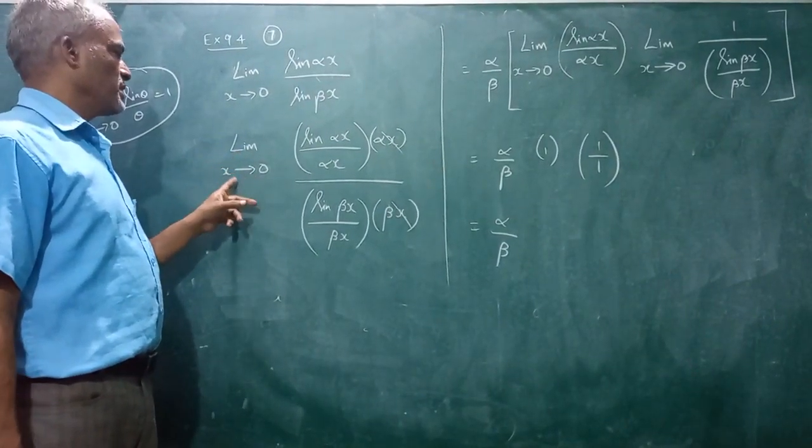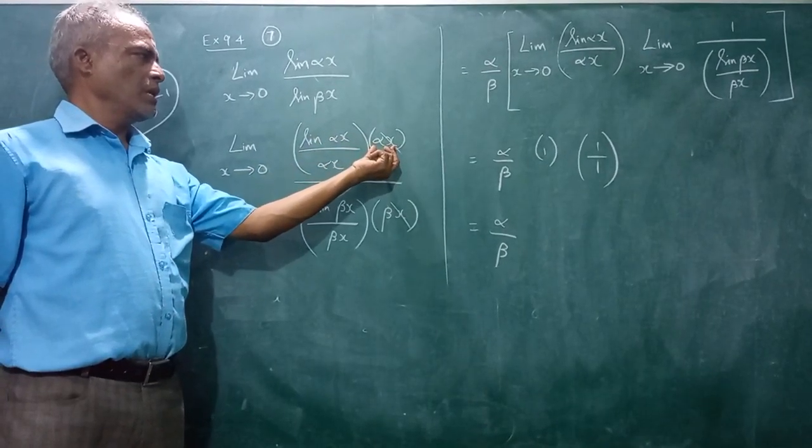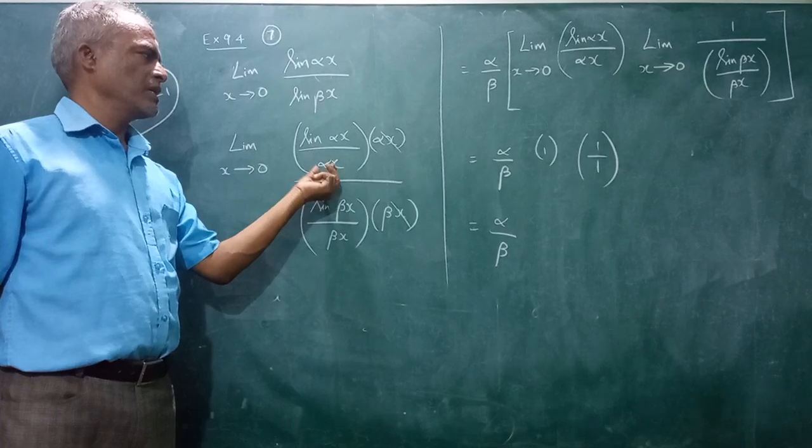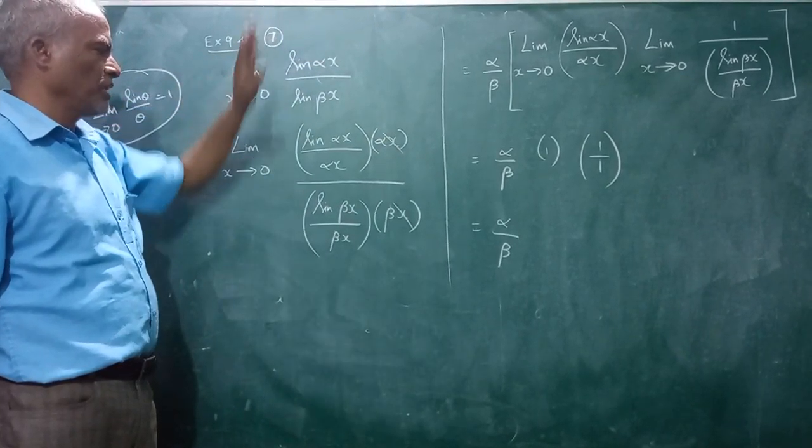Now this can be written as limit x tends to 0, sin alpha x multiplying and dividing by alpha x, the alpha x divided by alpha x, so these two terms get cancelled, value will not be altered in the numerator.